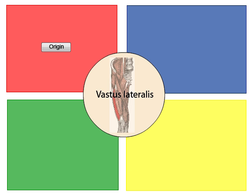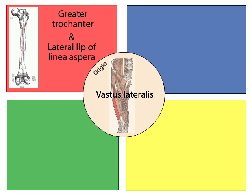Click on the Origin button. The origin of the vastus lateralis is the greater trochanter of the femur and the lateral lip of the linea aspera, a roughened surface on the posterior aspect of the femur.